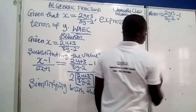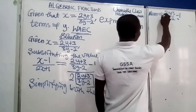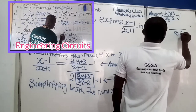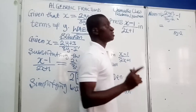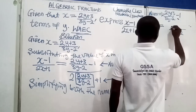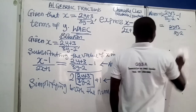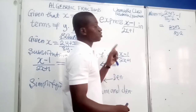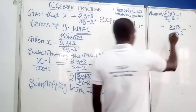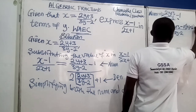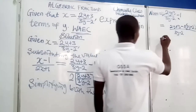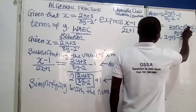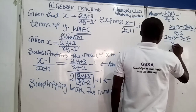This is a fraction and 3y minus 2 is our LCM. We are going to use this LCM to multiply through. So, 3y minus 2 divided by 3y minus 2 gives 1, and we use that 1 to multiply the numerator, giving 2y plus 3. There is an invisible 1 under the second term, so 3y minus 2 divided by 1 gives 3y minus 2, which multiplies the minus 1 to give minus 1 times bracket 3y minus 2. Expanding: 2y plus 3, minus 1 times 3y gives minus 3y, minus 1 times minus 2 gives plus 2, all divided by 3y minus 2.